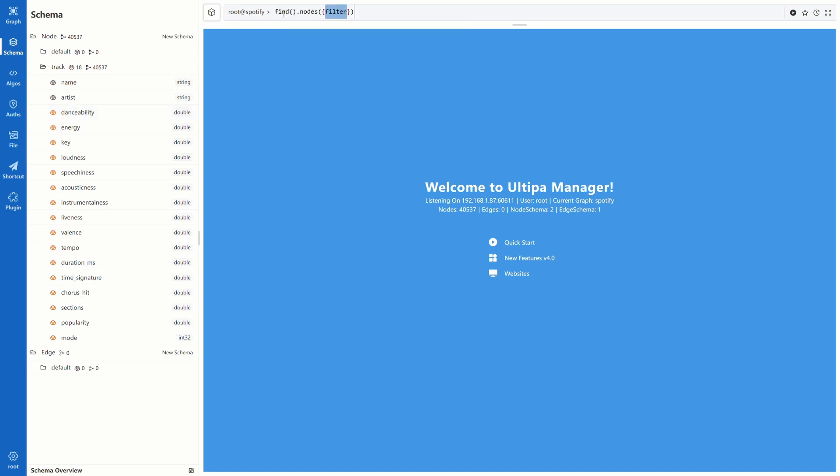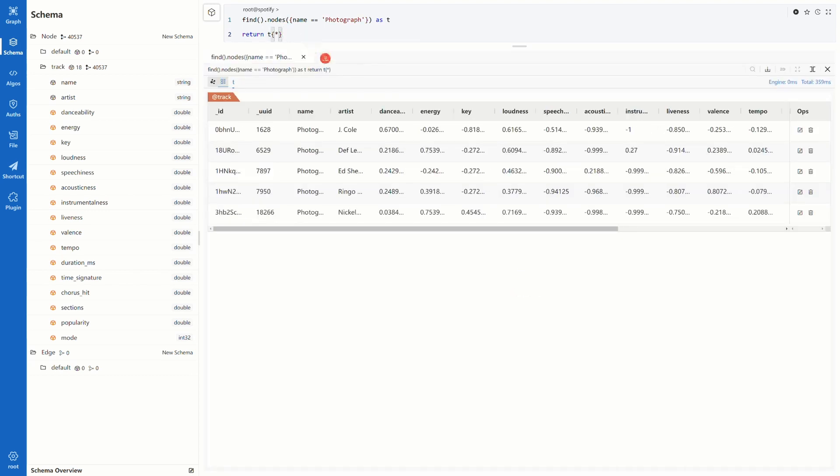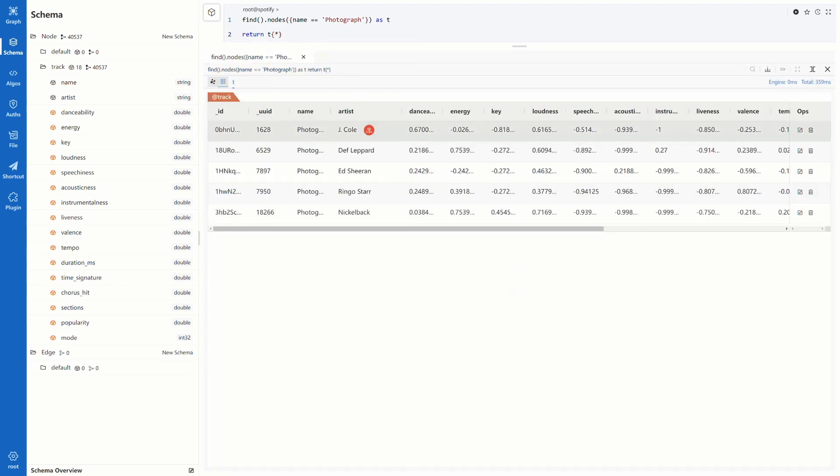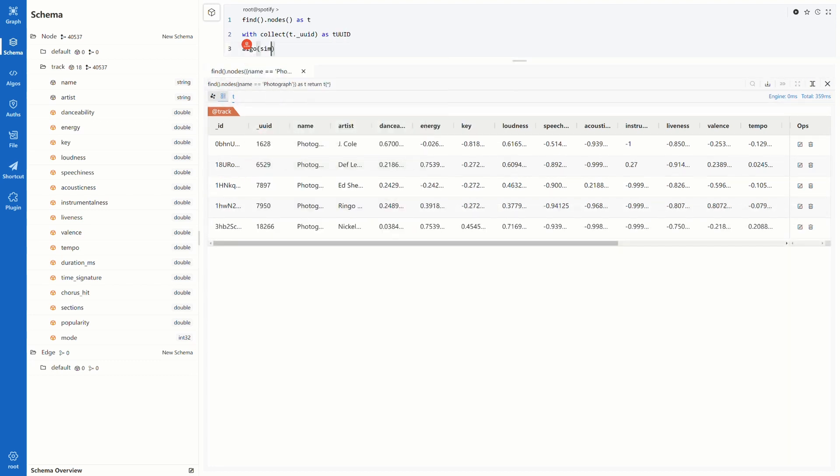We will use the song Photograph by Ed Sheeran as example. To find this node out, we will filter by name equal to photograph. We have 5 returns, and this one with UUID 7897 is what we want. Then we will compare all tracks in this graph with track 7897. Remove this condition to get all the tracks, then collect all the tracks' UUID in an array. We will pass it into the algorithm.